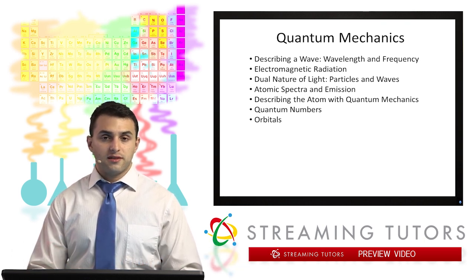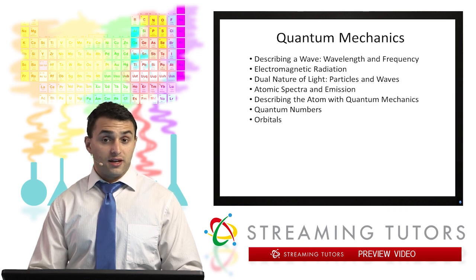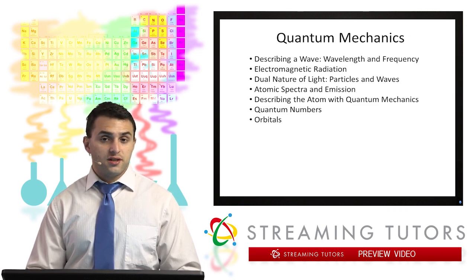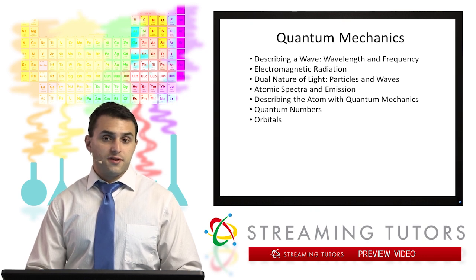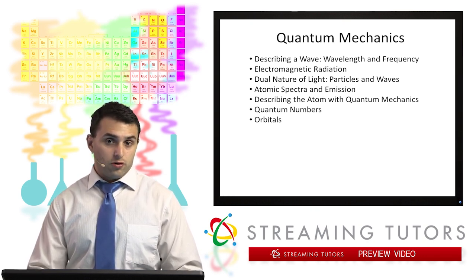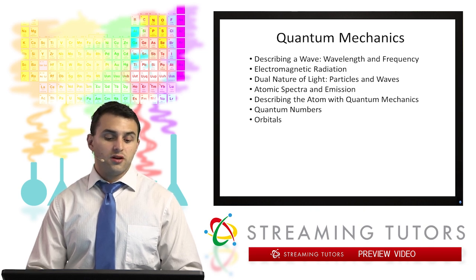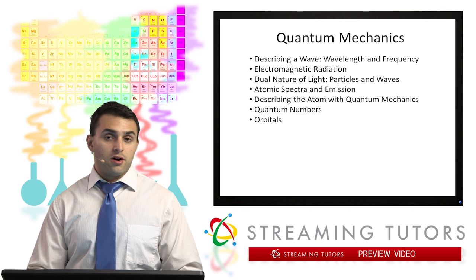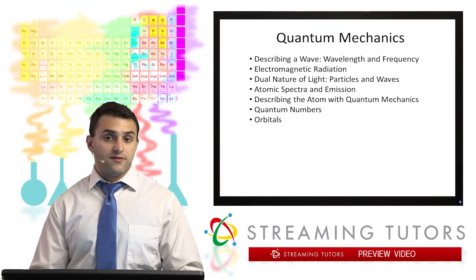We're going to start off by looking at the nature of light, what light is composed of, how it travels, its energy, etc. Later in this video we're going to get into the atomic side of quantum mechanics. We're going to look at orbitals, emission spectra, quantum numbers, and other ways that we can describe what's going on in the electrons in any kind of atomic system.